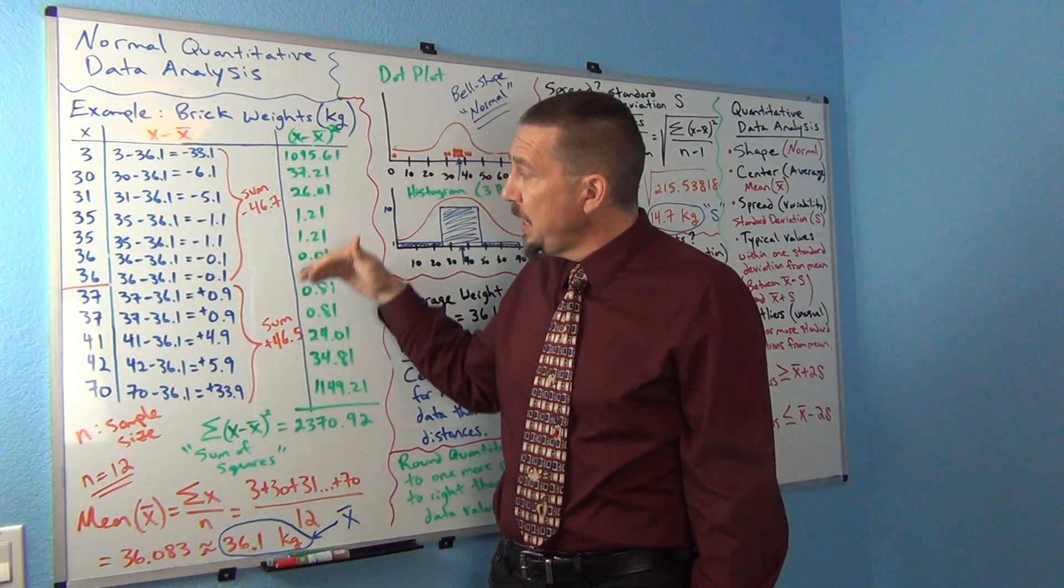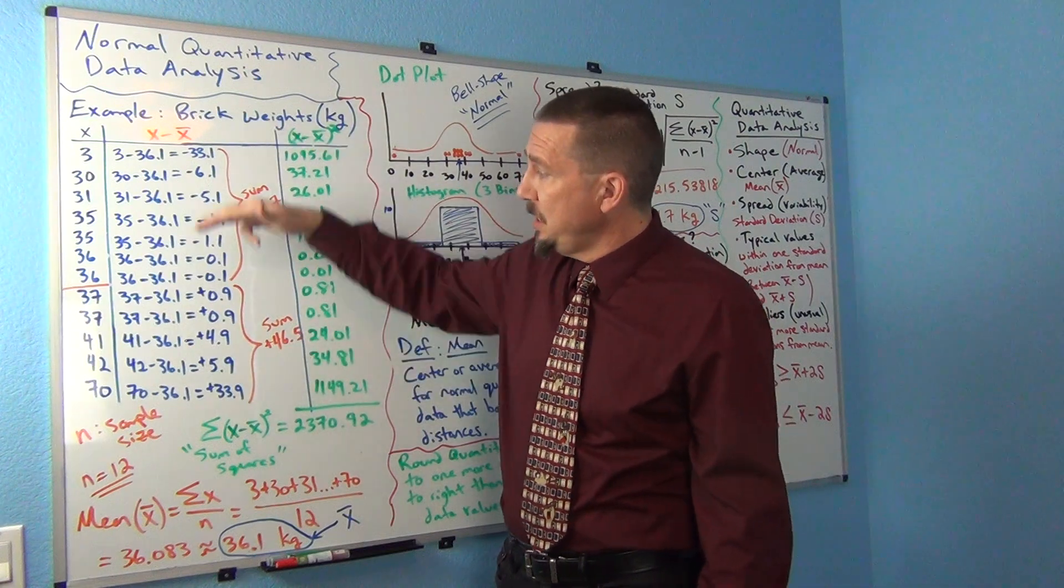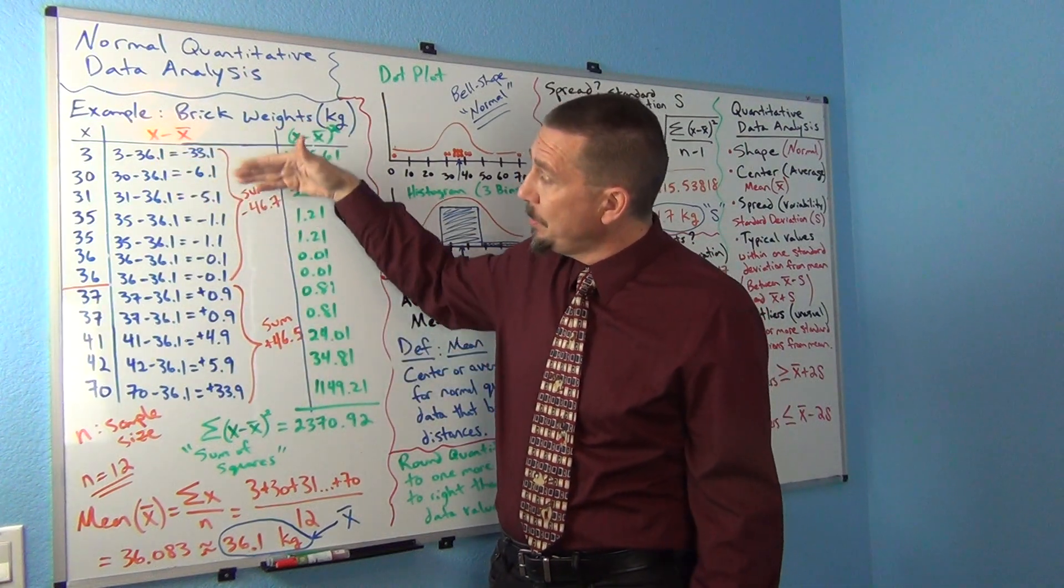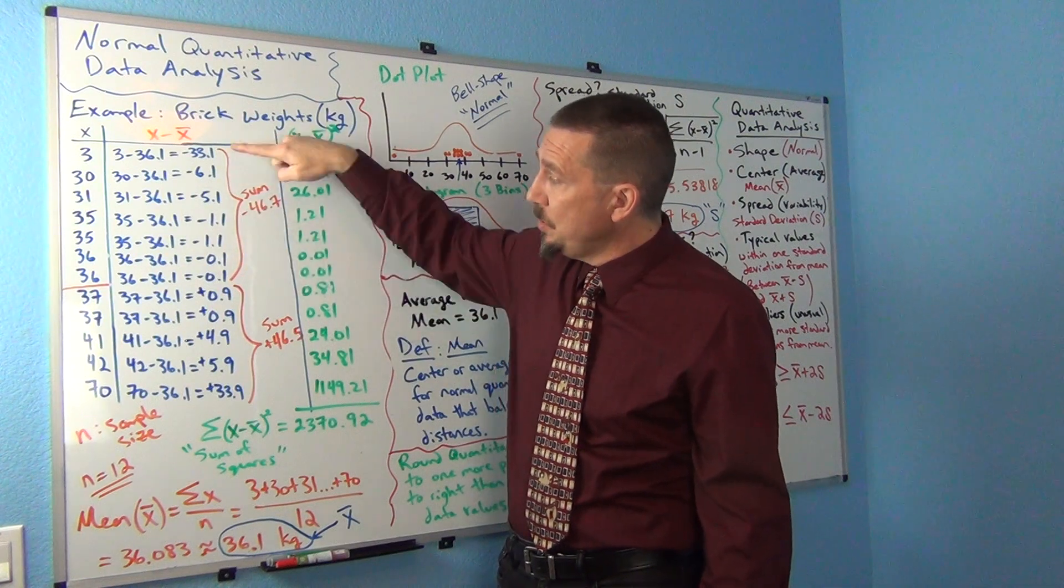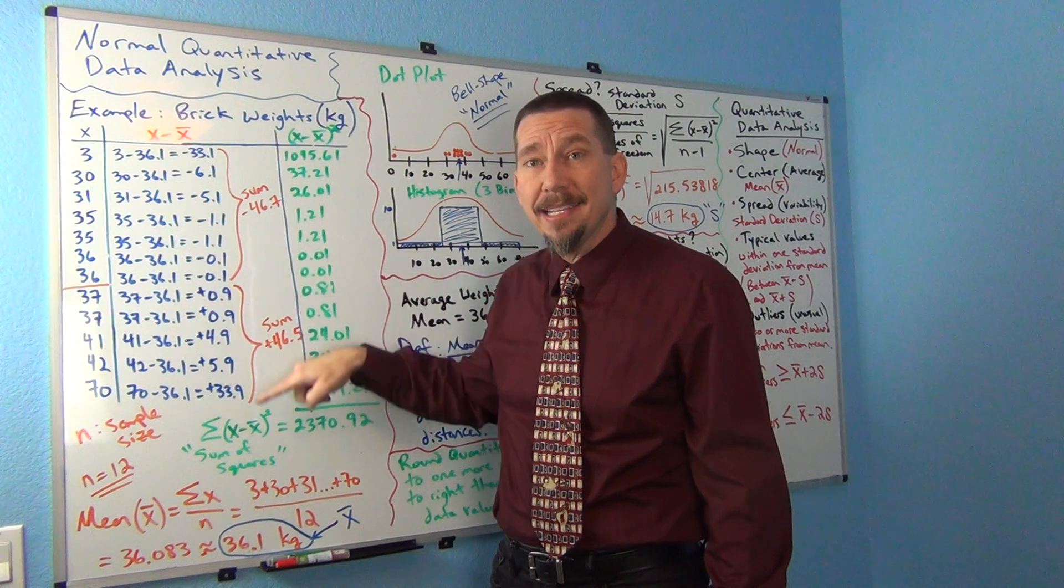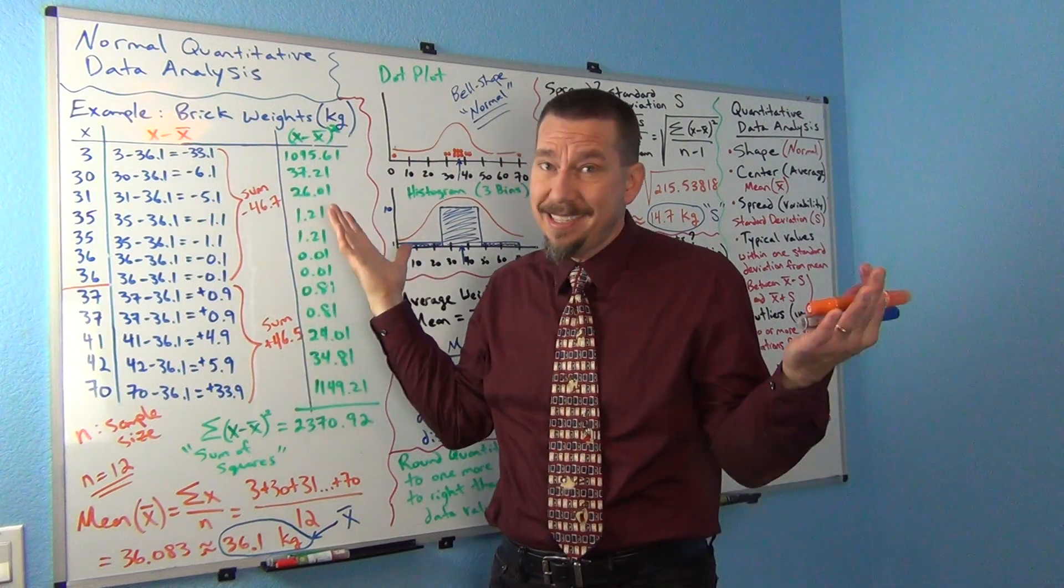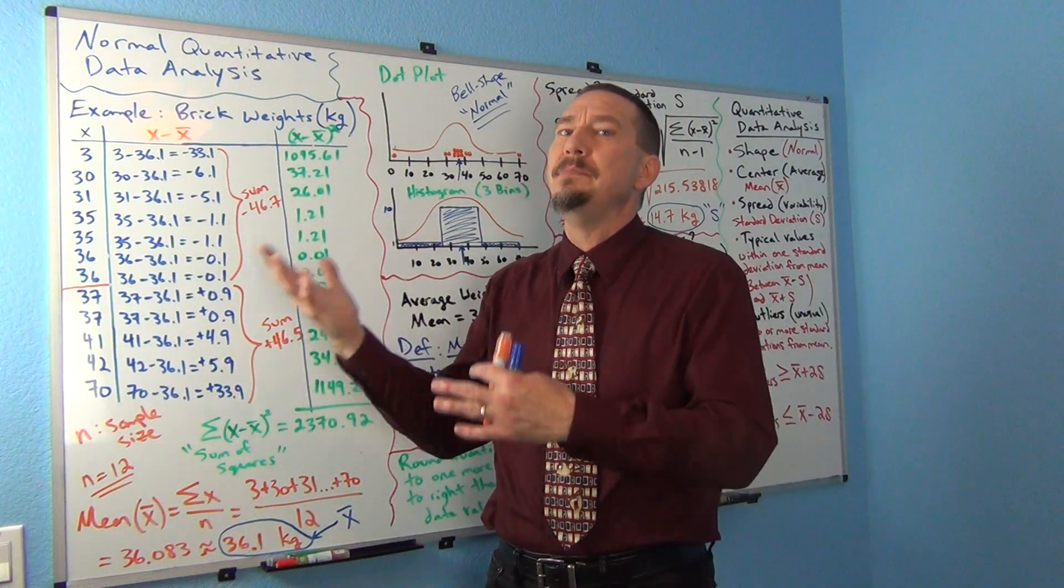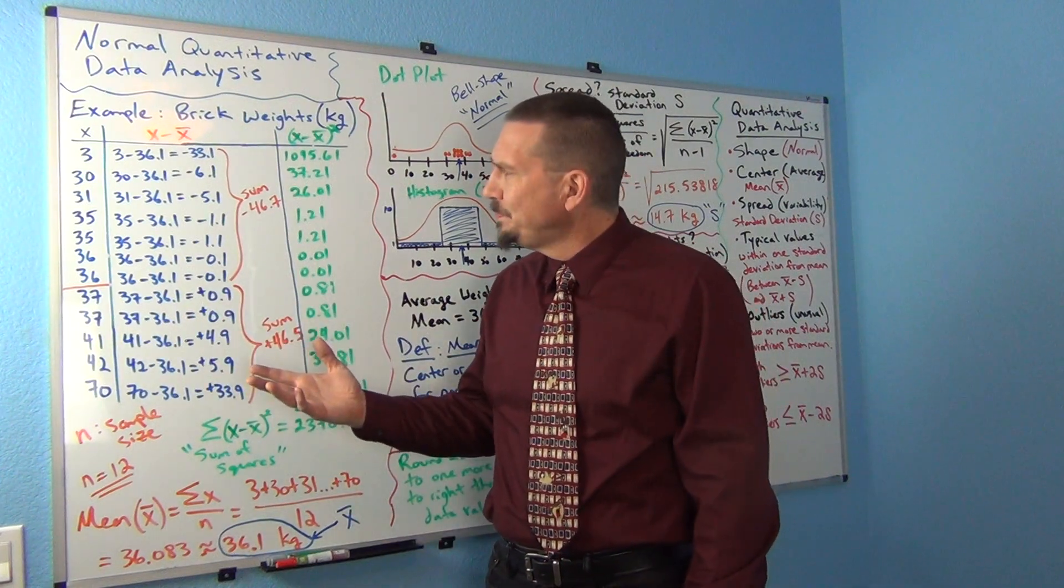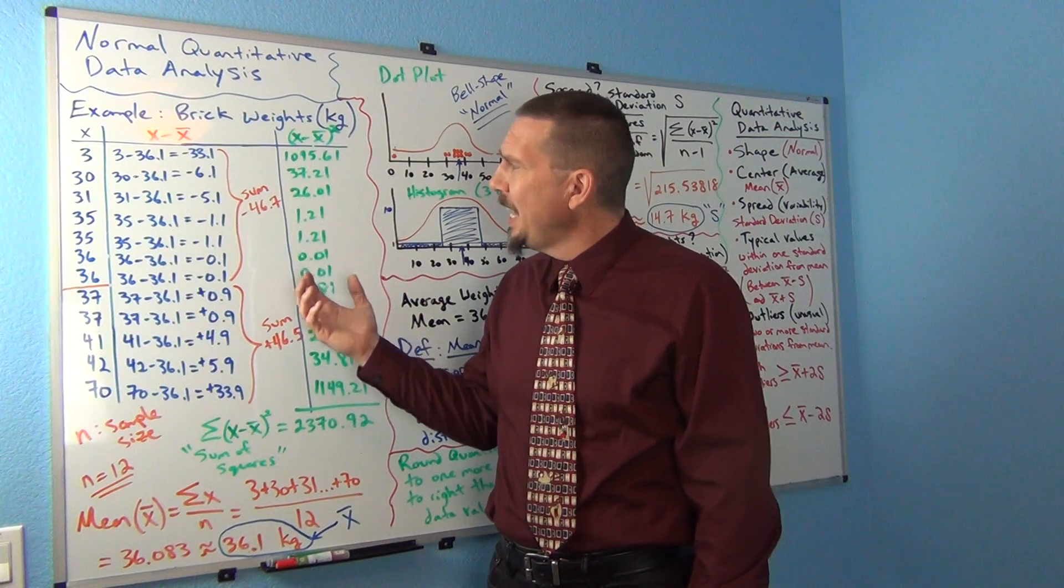What I want to know is, on average, how far are all these numbers from the mean? That's really what standard deviation measures. Now, you may think, why don't we just look at these distances when I did x minus x̄? The problem is that the numbers below the mean gave a negative distance, and the numbers above gave a positive distance. If I add them up, I get zero. That's not going to help me. Distance can't be zero.